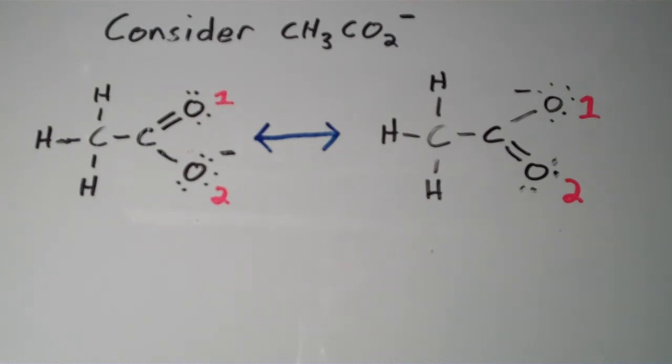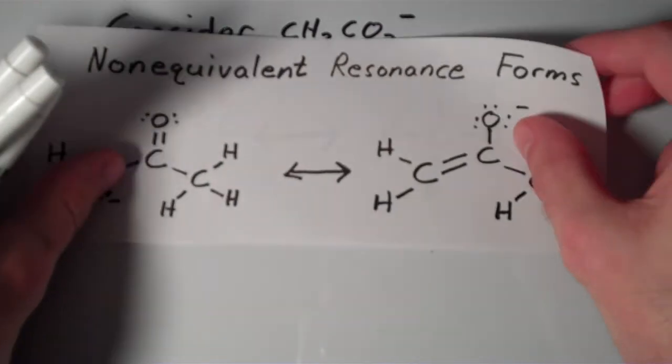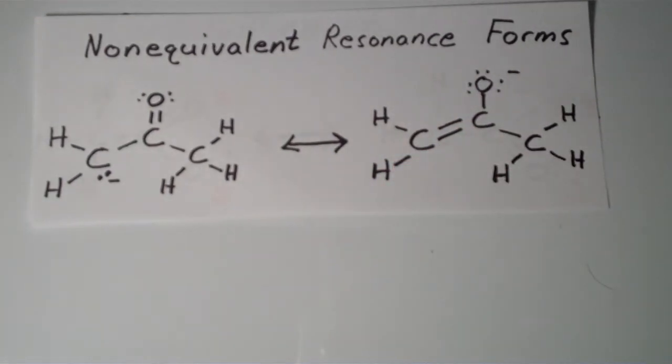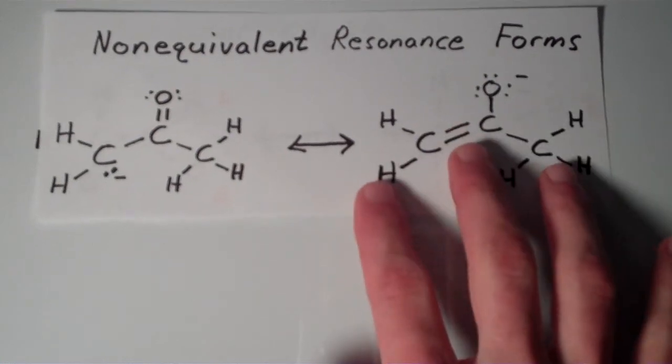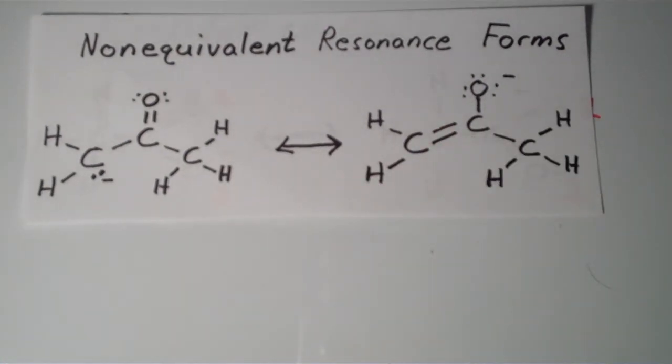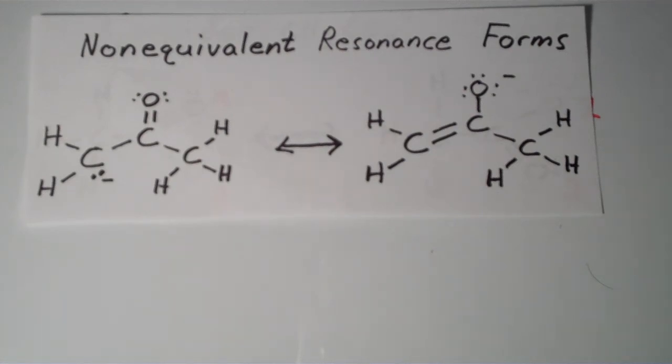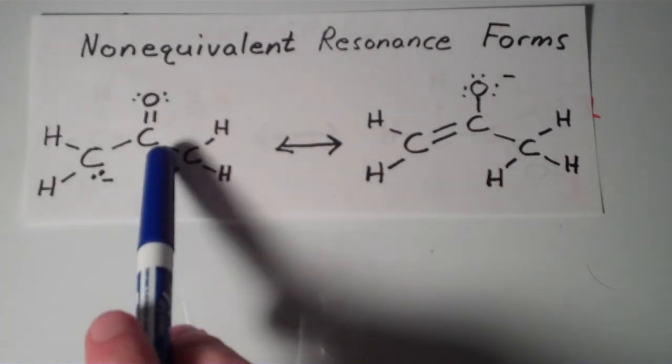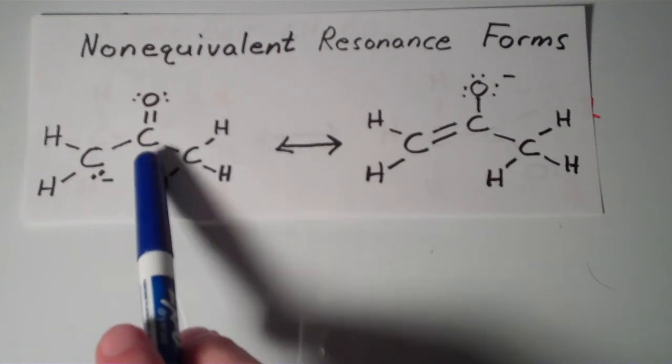But why don't we look at an example of non-equivalent resonance forms. So here I have, this is the Lewis structure for the conjugate base of acetone. It's basically just acetone minus a proton. And notice we have two non-equivalent resonance forms here. We have one resonance form that has a lone pair and a negative charge on a carbon and then a carbonyl group, a C double bond O group.